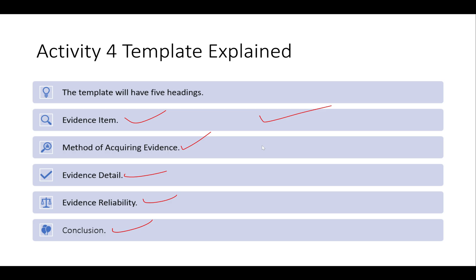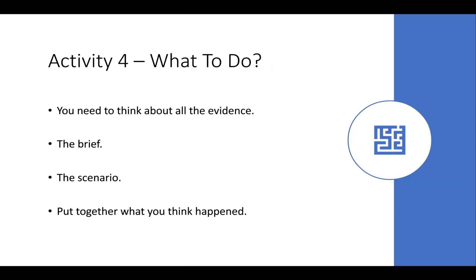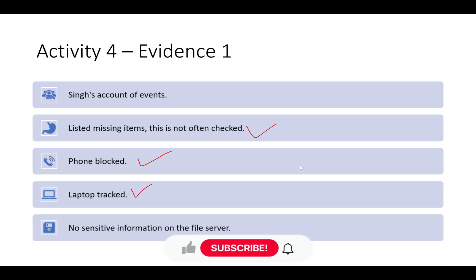For Method of Acquiring Evidence, explain how the evidence was obtained. For example, for a meeting with the facilities management company, you'd say an interview was held, these people were involved, and statements were taken. For Baljinder Singh's report, you'd say he remembered the events, gave an account, and made note of everything he recalled.